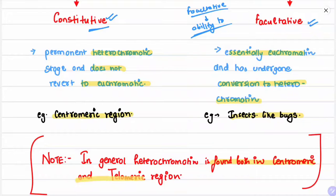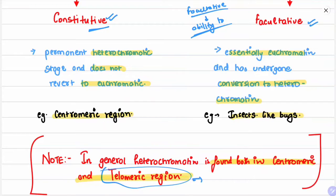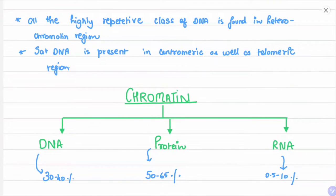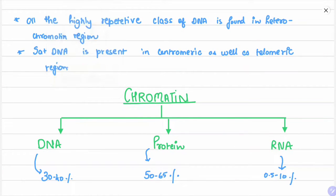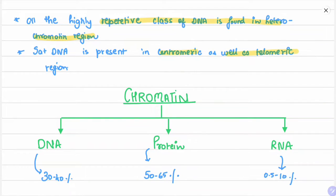In general, heterochromatin is found in both centromeric and telomeric regions. All highly repetitive classes of DNA are found in the heterochromatinized region. Satellite DNA is present in both the centromeric and telomeric regions — this is an important point.